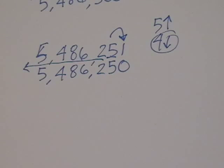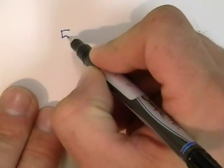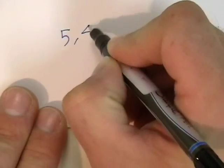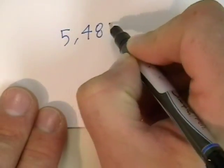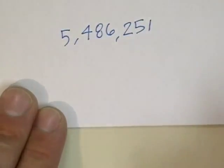Those are some examples about how to round numbers to the nearest ten, hundred, ten thousand, hundred thousand, and million. If we were to round this number to the nearest thousands, we follow the same procedure. We have 5,486,251.